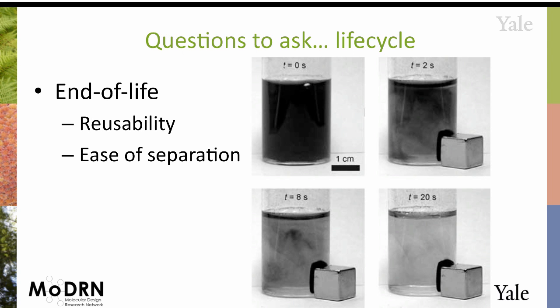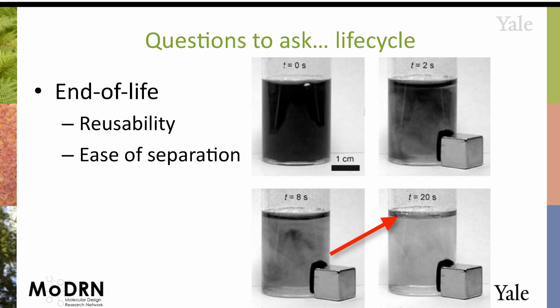At end of life — beyond the pharmaceutical issues already mentioned — can you reuse the catalyst and can you separate it from the product mixture? This can be very difficult, especially if the catalyst has a very small particle size. We're starting to see innovations like attaching catalysts to magnetic beads. Here's a photo of a chemical reaction where the catalyst is dispersed in solution and probably too small to filter effectively. But by applying a magnet, they cause all the catalyst to lump up on the side, and then you can just pour off your product mixture.